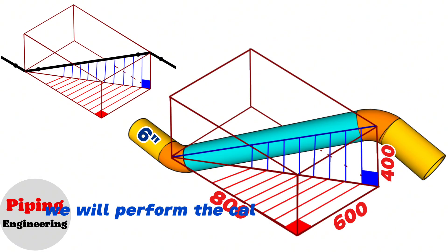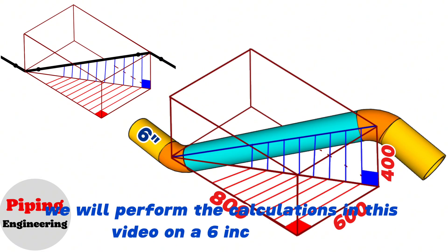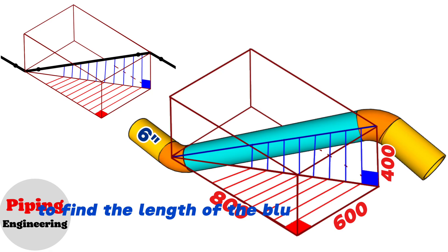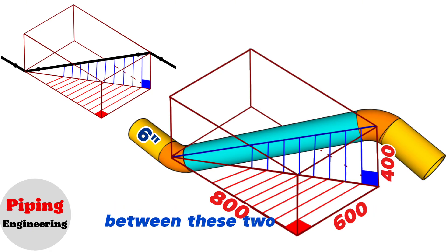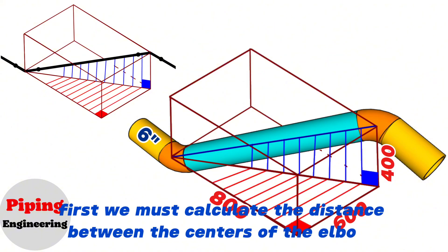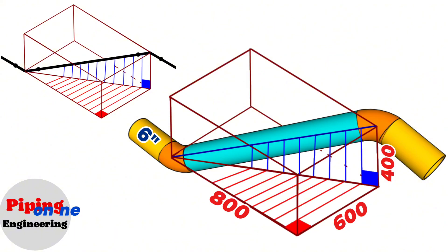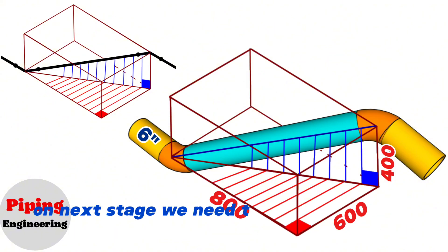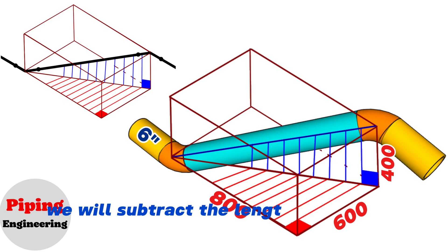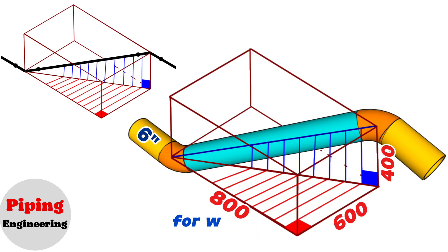We will perform the calculations in this video on a 6-inch pipeline. To find the length of the blue color pipe piece between these two elbows, first we must calculate the distance between the centers of the elbows. Next we find the lengths of the 6-inch cut elbows, and finally subtract the elbow lengths and welding gaps from the total length. Let's go step by step.